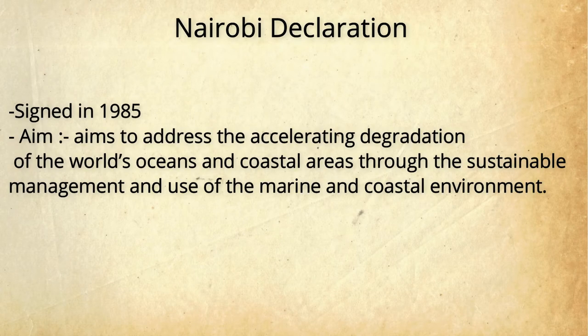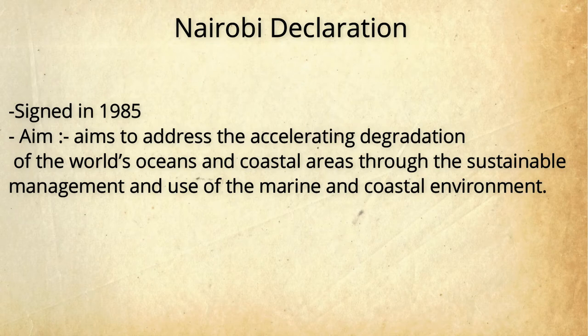The Nairobi Declaration was signed in the year 1985. Its aim was to address the degradation of the world's oceans and coastal areas through sustainable management and use of marine and coastal environments. The main goal was to protect coastal areas and sea waters from environmental degradation.